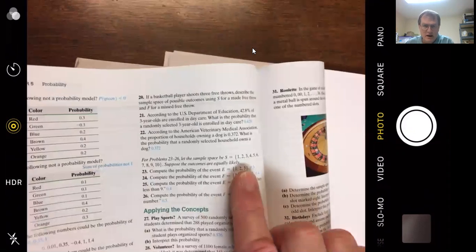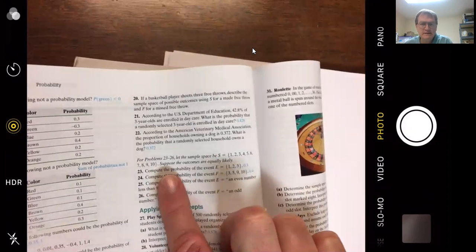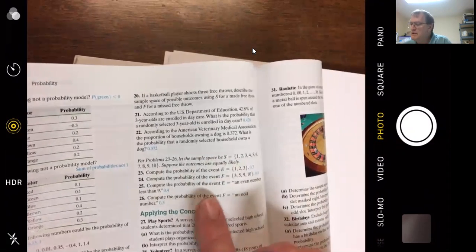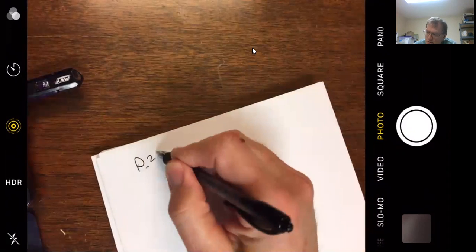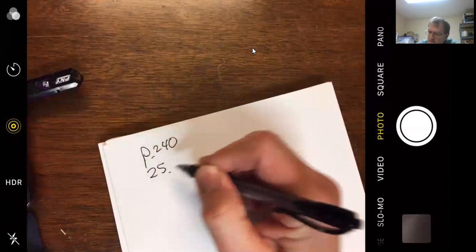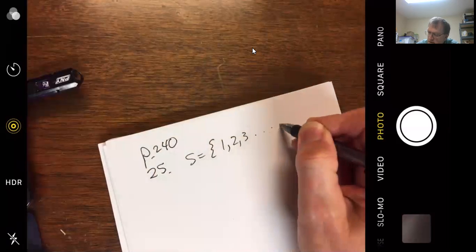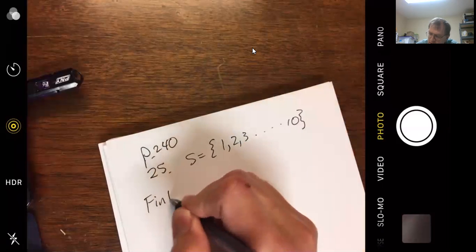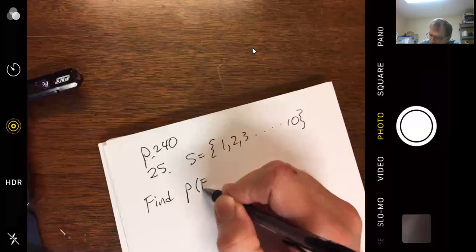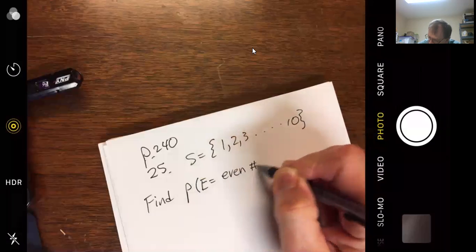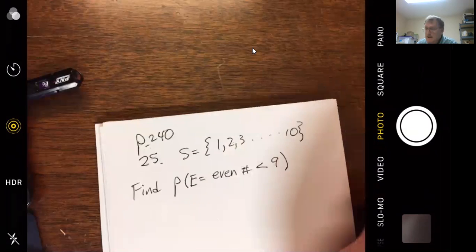Let's see. Picking one off page 240. Why don't we try one like number 25? And you're given a sample space of whole numbers 1 through 10. Equally likely outcomes. 25 is probability of an event. It's an even number less than 9. Strictly less than 9, it says. This is off page 240. Problem 25, sample space is numbers 1, 2, 3, goes up to 10. Find probability of, they call it an E, which is an event. Even number less than 9. Strictly less than 9, it says.